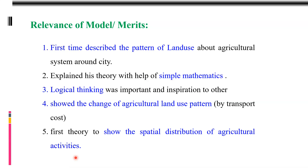In India also, Dr. Shafi applied this model in the Aligarh district of Uttar Pradesh. Due to this model, people started researching and studying agricultural land use. Credit goes to Van Thünen — he showed the changes in agricultural land use patterns with the help of transport cost. It was the first theory or model to show the spatial distribution of agricultural activity, and this model is still applicable today.